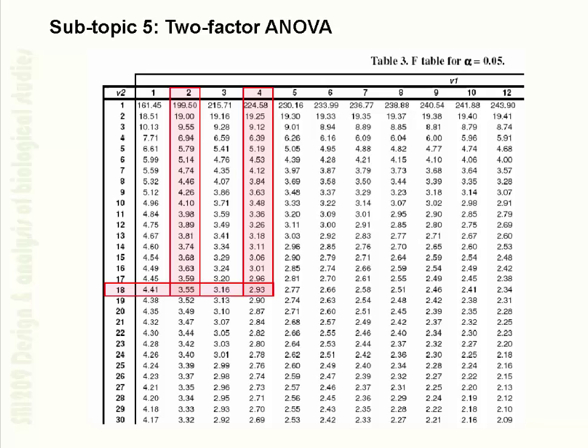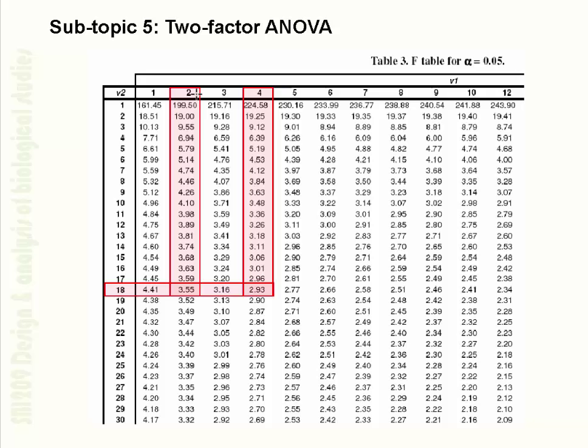The next graphic shows how to obtain F-table values: 18 degrees of freedom for within, and 2 or 4 degrees of freedom for the main effect and interaction respectively. This is a nice example of a two-factor design showing the complications that can arise when interpreting results — particularly when there is a significant interaction.